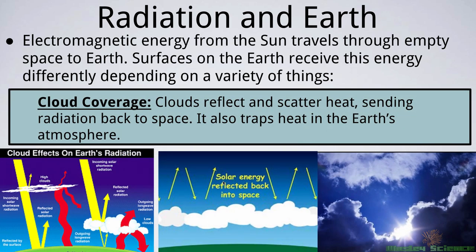Then we can get into cloud coverage. Clouds reflect and scatter radiation back to space, which helps us not get too hot. At night, clouds can help trap heat and keep temperatures from getting too cold. If you were out during the day and it was cloudy, you may notice it's not as hot as a clear day. And at night, cloudy nights are actually still kind of warm, whereas a clear night — you can see all the stars, but you'd better bring a sweatshirt because it's going to be cold.